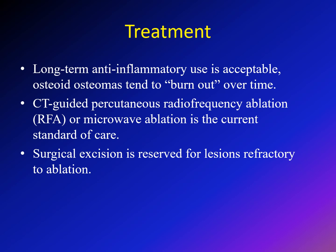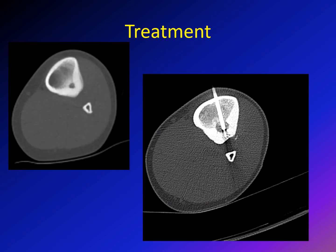In cases where radiofrequency ablation is not suitable, surgical excision is the line of treatment. Here is an example of CT ablation: the probe is introduced under CT guidance and, when exactly in the lesion, radioablation is done to kill the tumor.